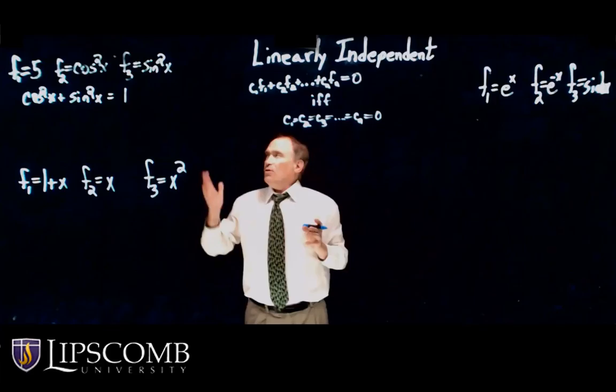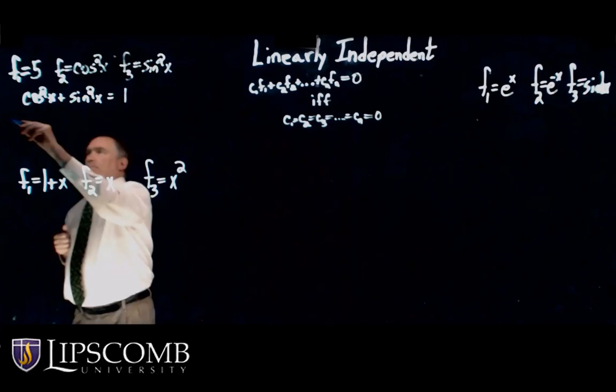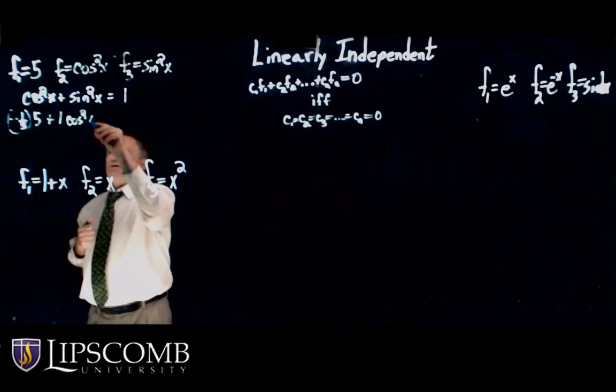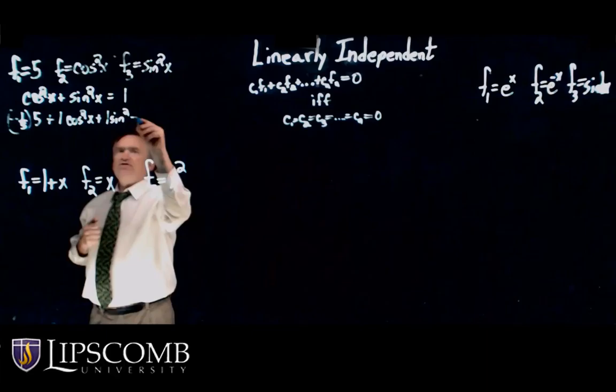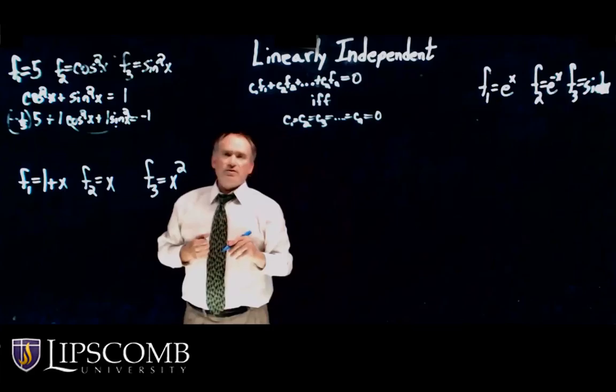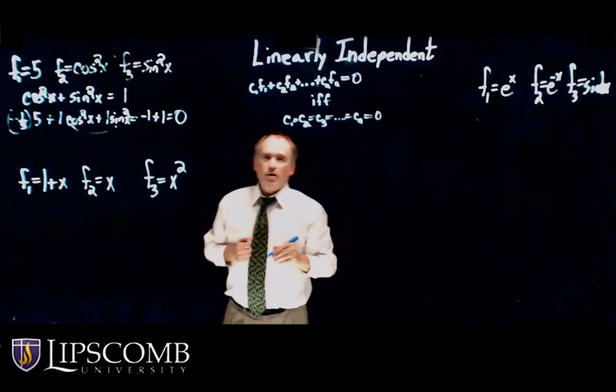So let me see if I can use that. So let's let minus 1 fifth times 5, that's times the first constant, plus 1 times cosine squared x, plus 1 times sine squared x. Let's see what we get. Well, of course, minus 1 fifth times 5 is minus 1. As we said, cosine squared x plus sine squared x is 1. Negative 1 plus 1 is 0.